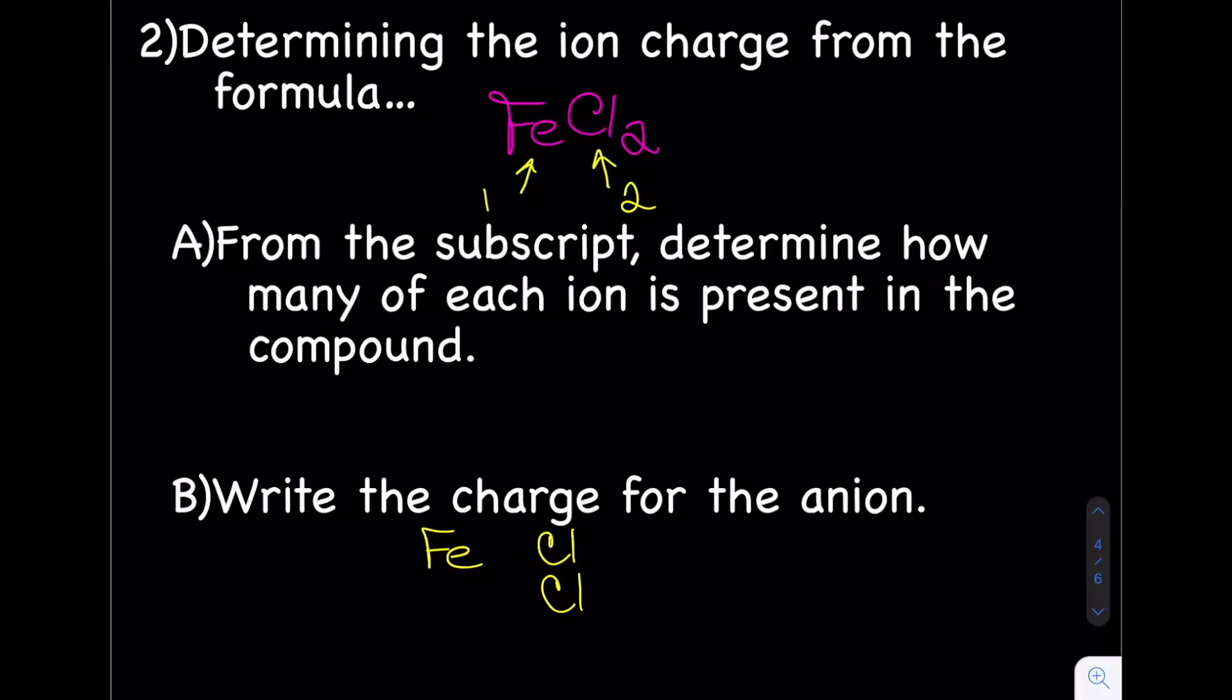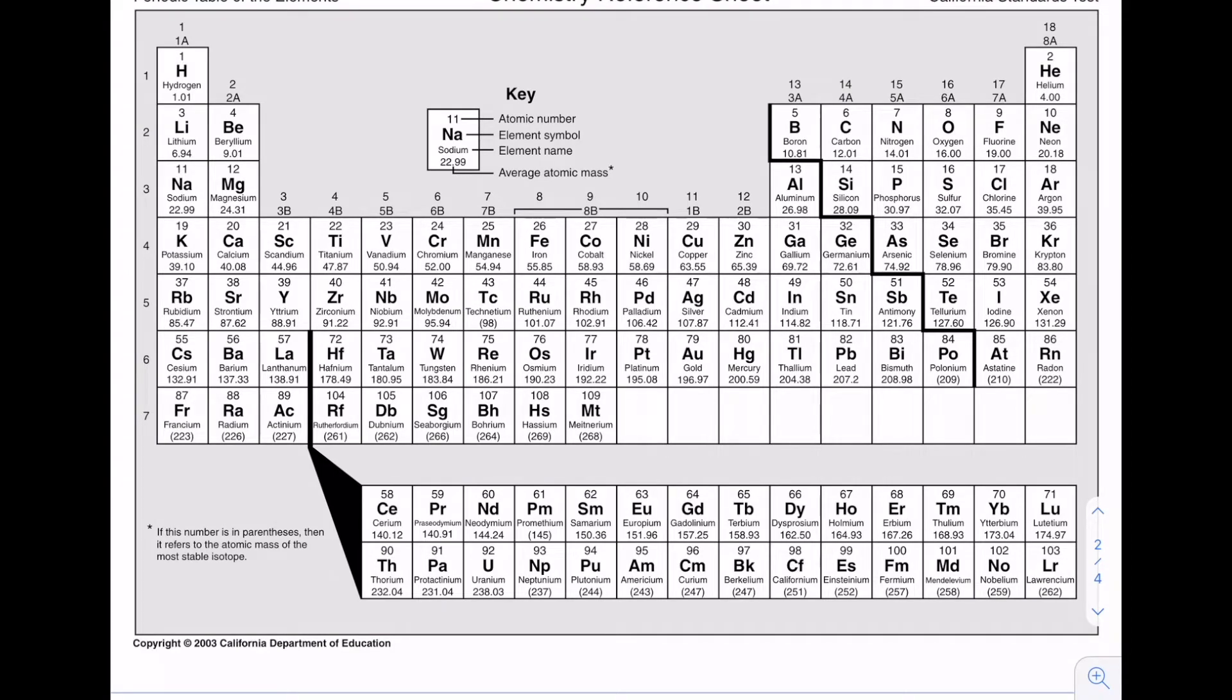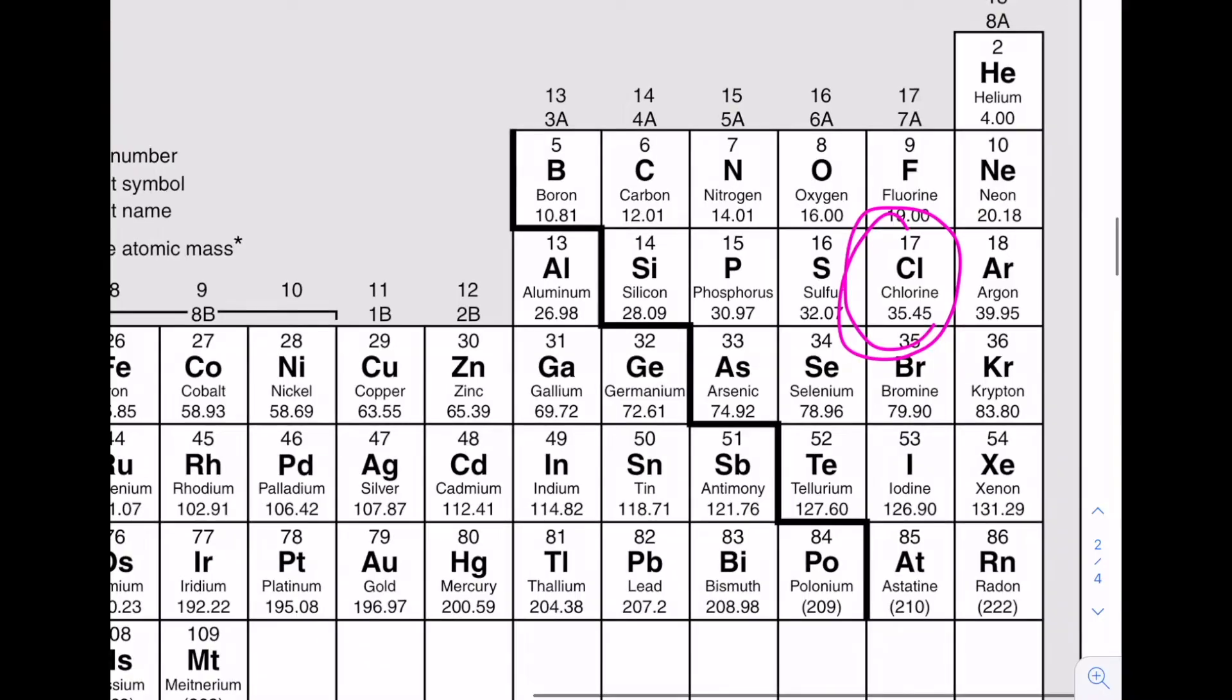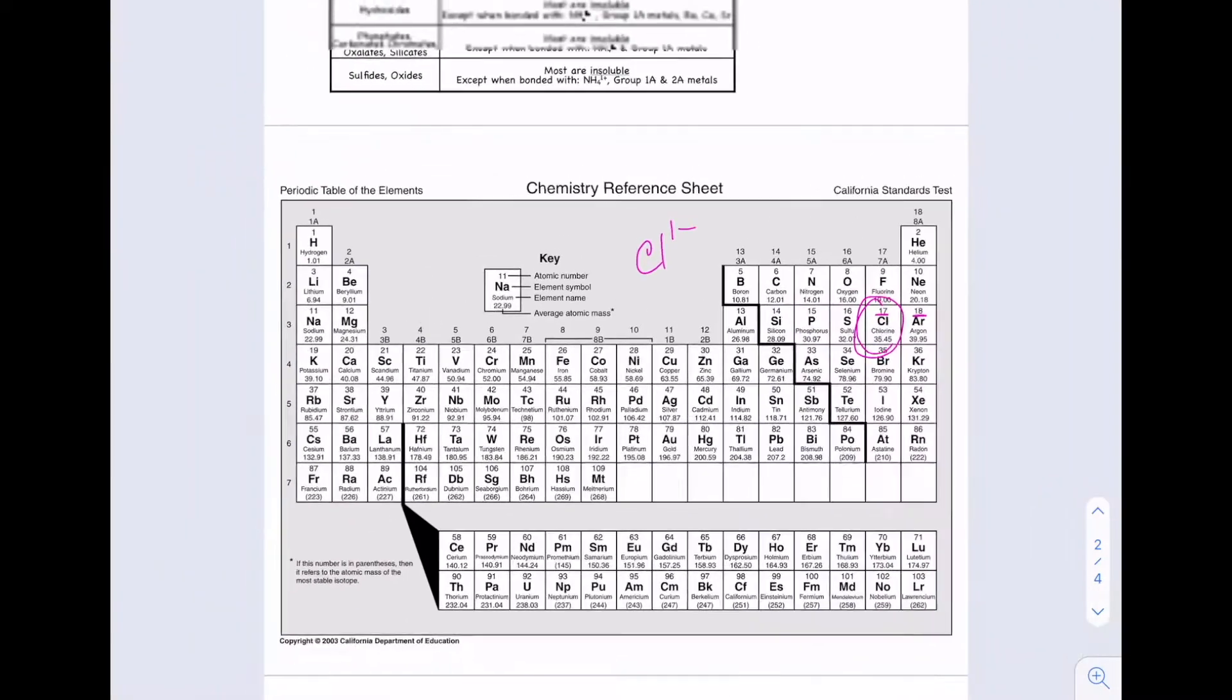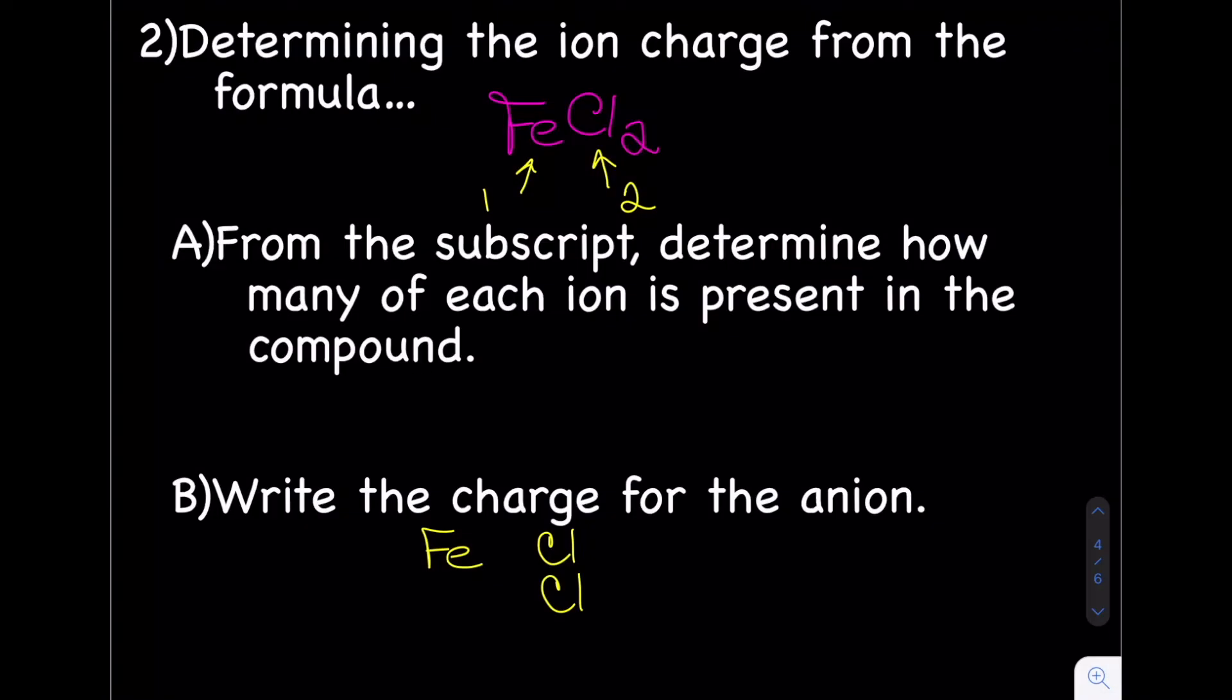How do I figure out the charge? Determining the ion charge from the formula. From the subscript, determine how many of each type of ion is present. We have one iron and two chlorines. Then, we need to write the charge for the anion. Let's check out a periodic table. Chlorine is here. It's an anion, meaning it's going to gain electrons to become like a noble gas, becoming isoelectronic with argon. So it's Cl1-.